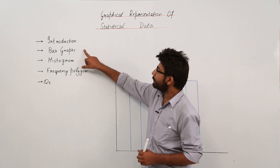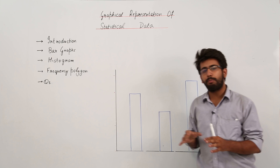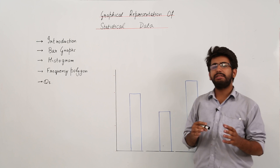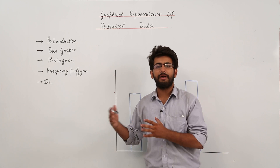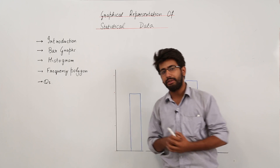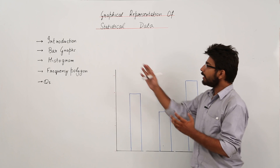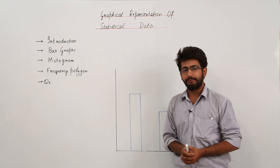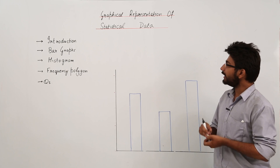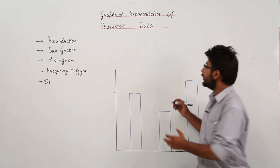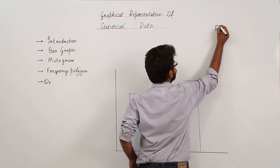There are three different forms of graphically representing data: bar graphs, histograms, and frequency polygons. We'll start with the bar graph, and I'll give you a small example with some data.